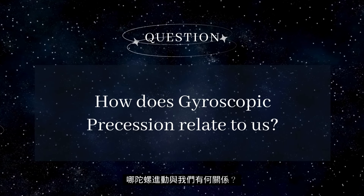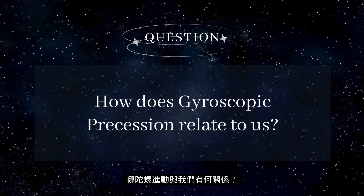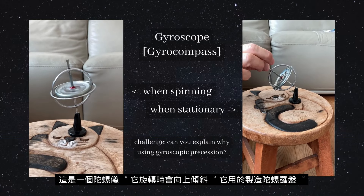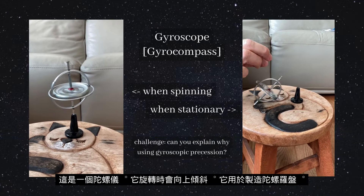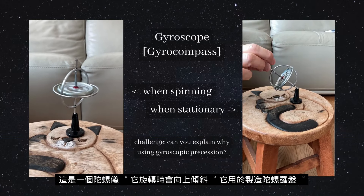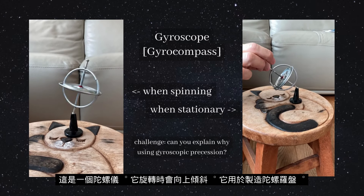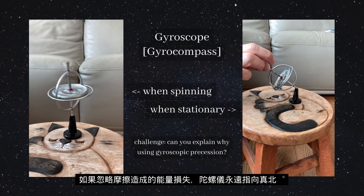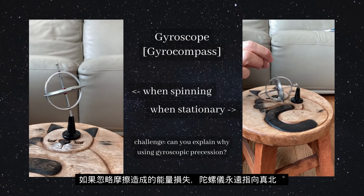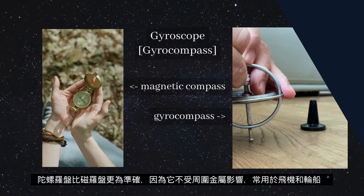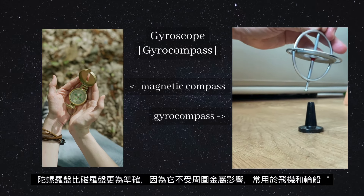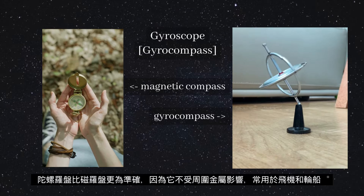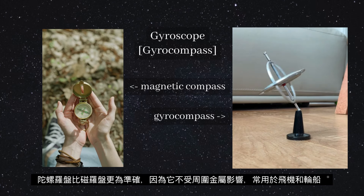Cool! But how does gyroscopic precession relate to us? Here is the gyroscope. It tilts upwards and resists gravity when spinning. This feature is used in making gyro-compasses, where — ignoring energy loss — the gyroscope constantly points to true north. This proves to be better than the magnetic compass because it is not affected by the metal around it, and is commonly used on airplanes and ships.